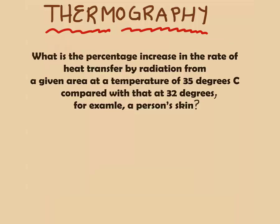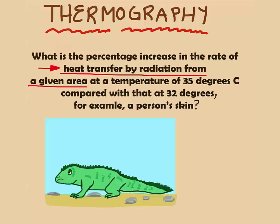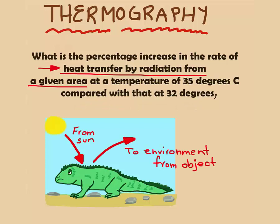Let's see an example. We need to understand what we mean by heat transfer by radiation from a given area. When we're talking about radiation, we mean the emission of radiation into the environment by an object at a temperature T. Say we have a lizard. It gets radiation from the sun and it also emits radiation into the environment in the form of heat.